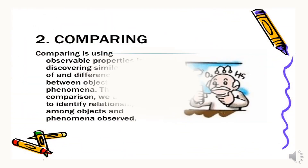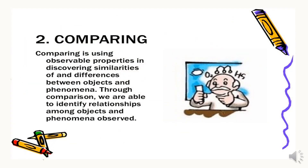Comparing is using observable properties and discovering similarities and differences between objects and phenomena. Through comparison, we are able to identify relationships among objects and phenomena observed.